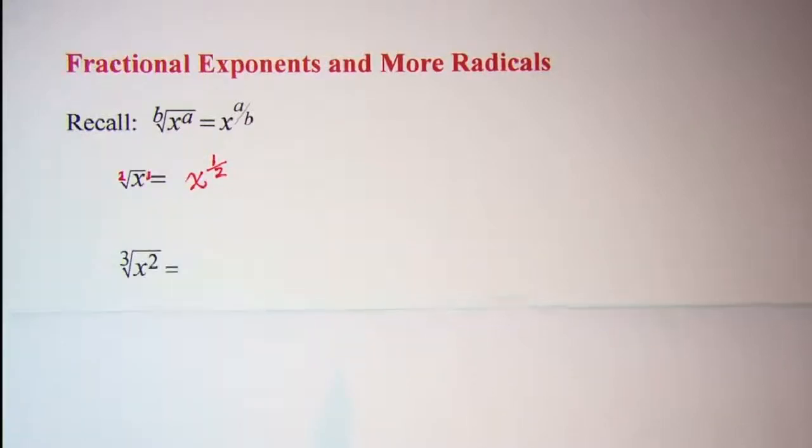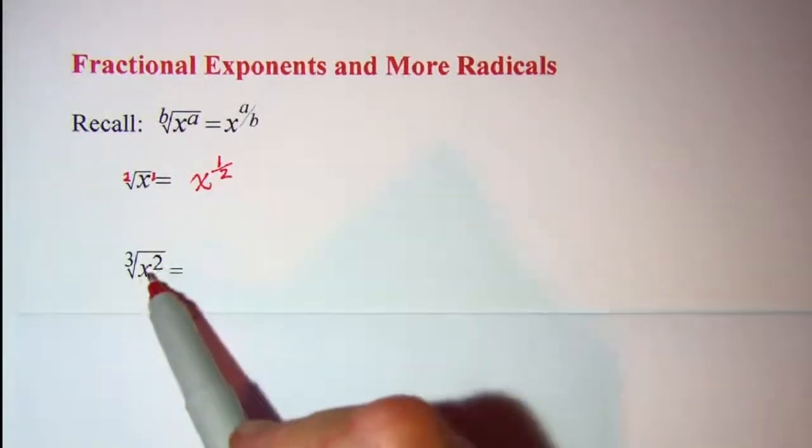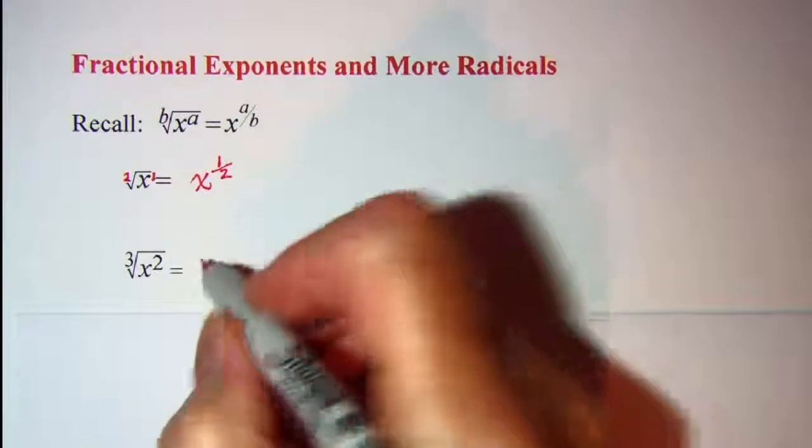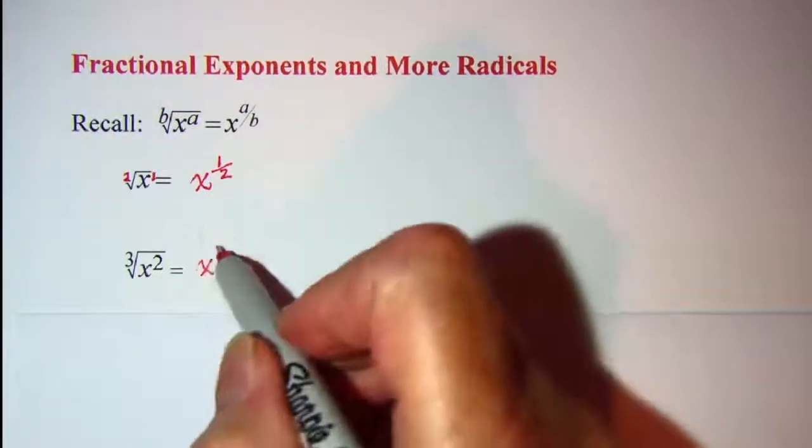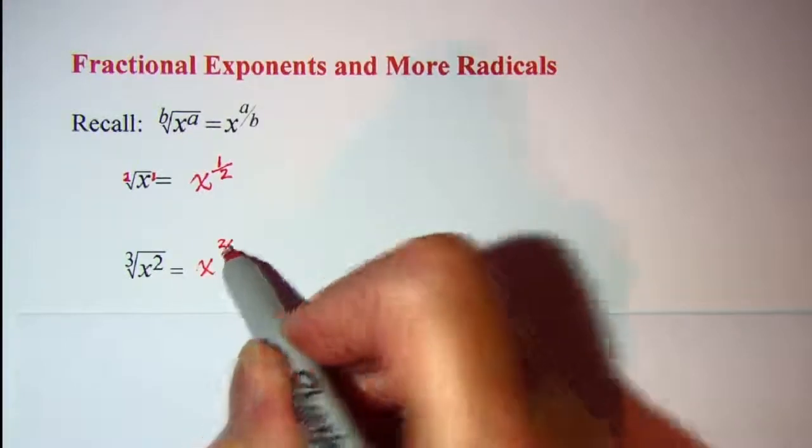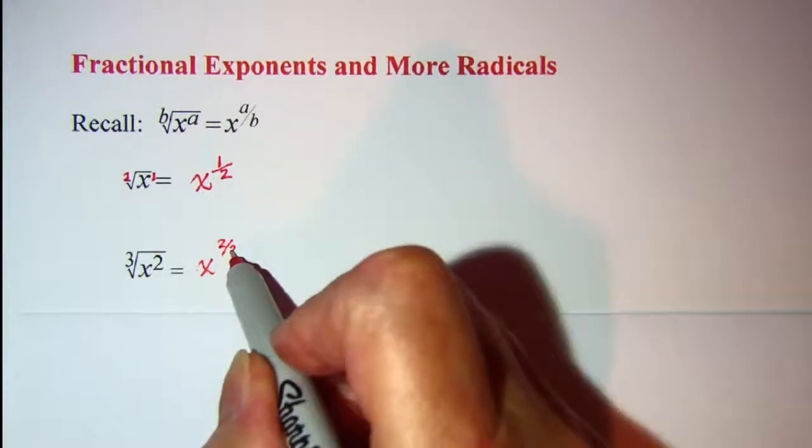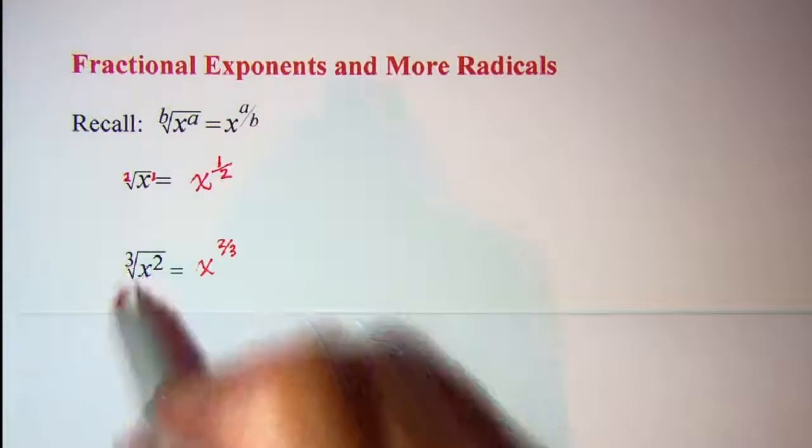Let's do one more of these. On this one our base is x. Then for the exponent my numerator is 2 and my denominator is 3, which is the index on the radical.